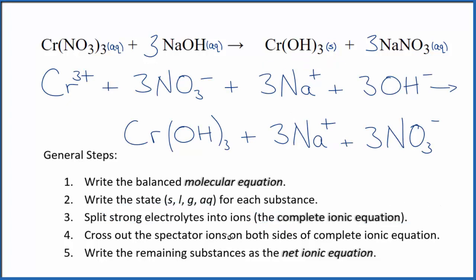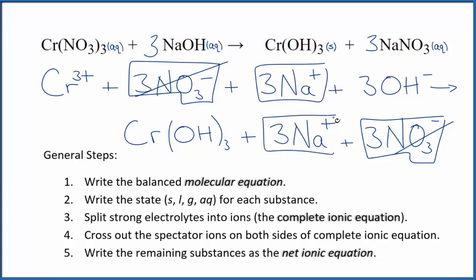Now we're going to cross out the spectator ions. They're on both sides. I can see in the reactants on the top here, I have three of these nitrate ions. I also have three nitrate ions in the products. So these are spectator ions. We can cross those out. Three sodium ions in the reactants and in the products. Cross those out. What's left is the net ionic equation for Cr(NO3)3 plus NaOH.